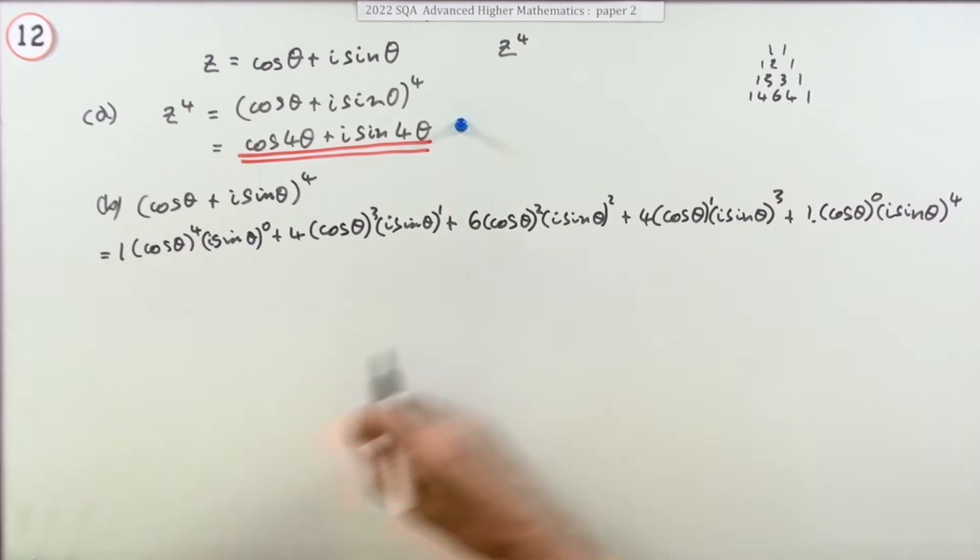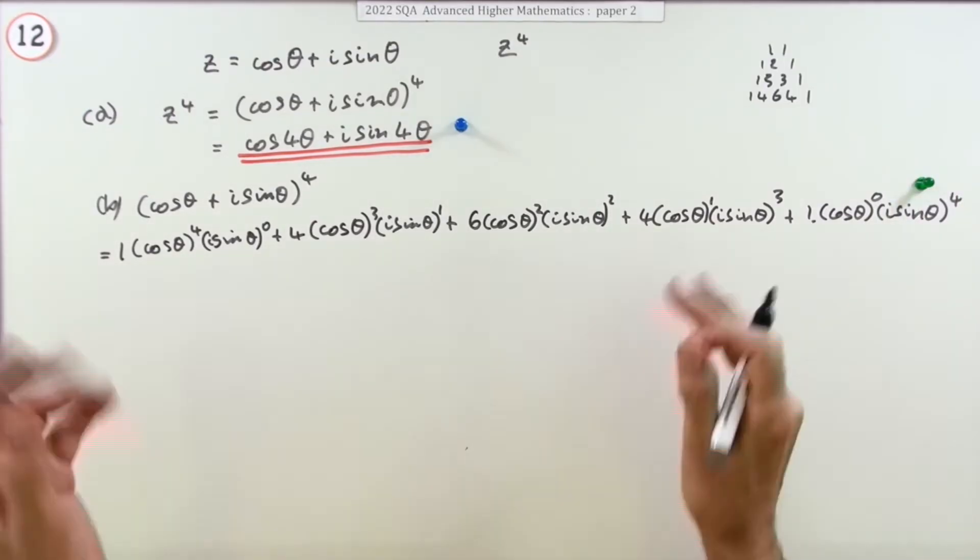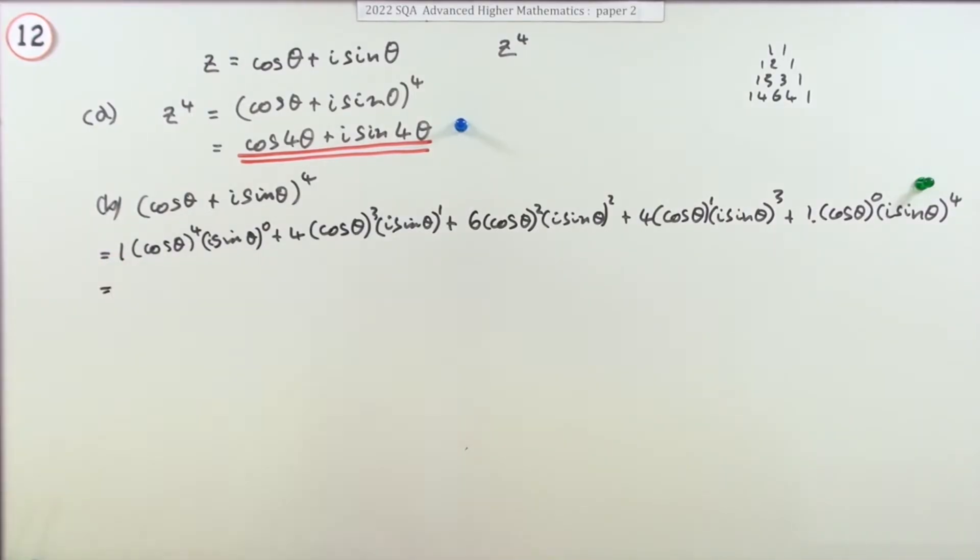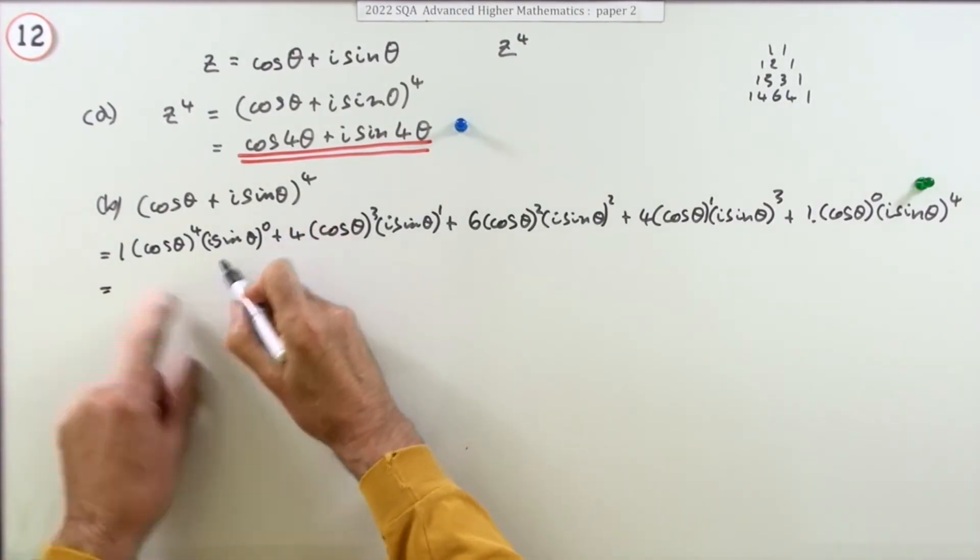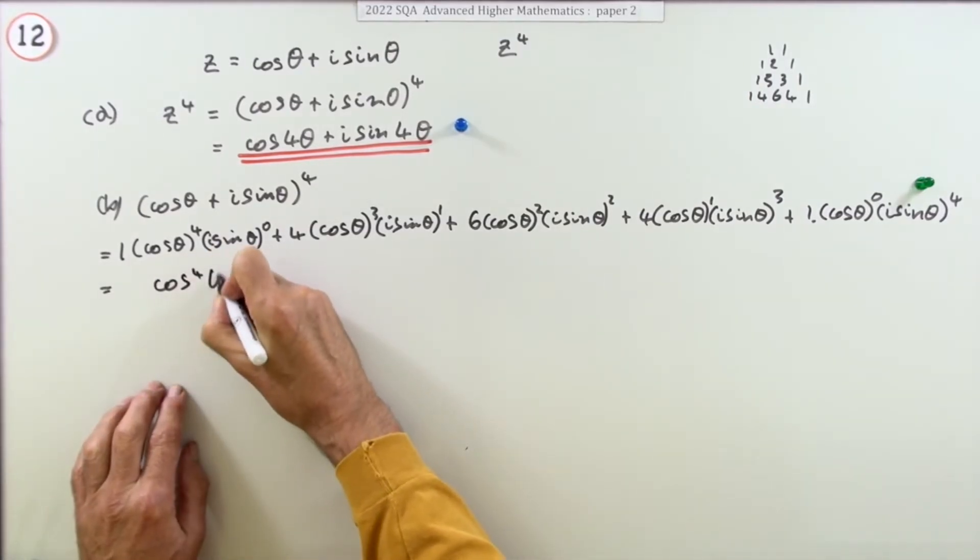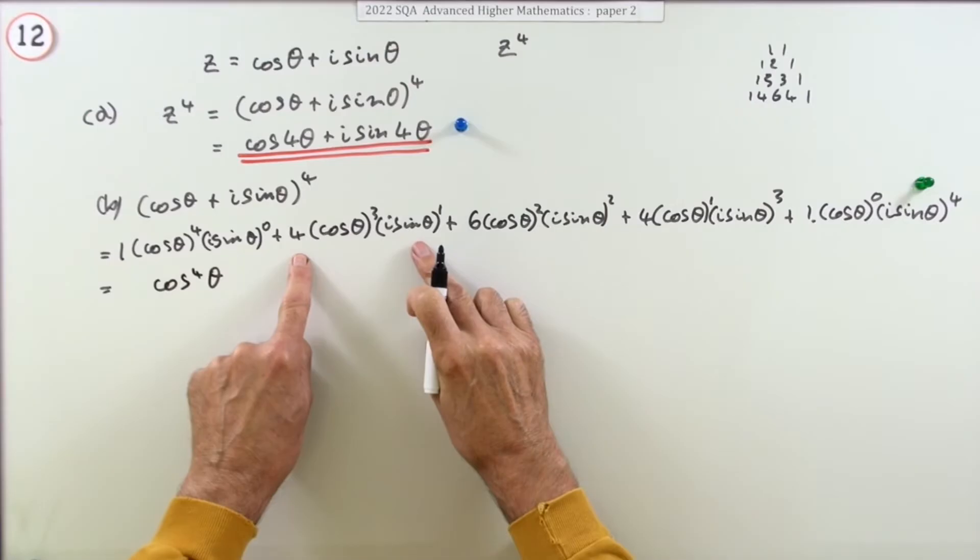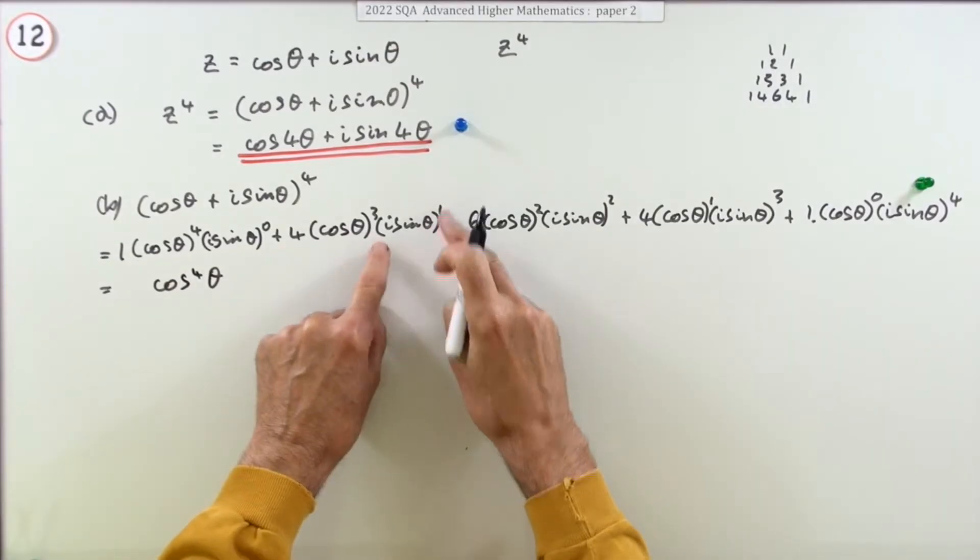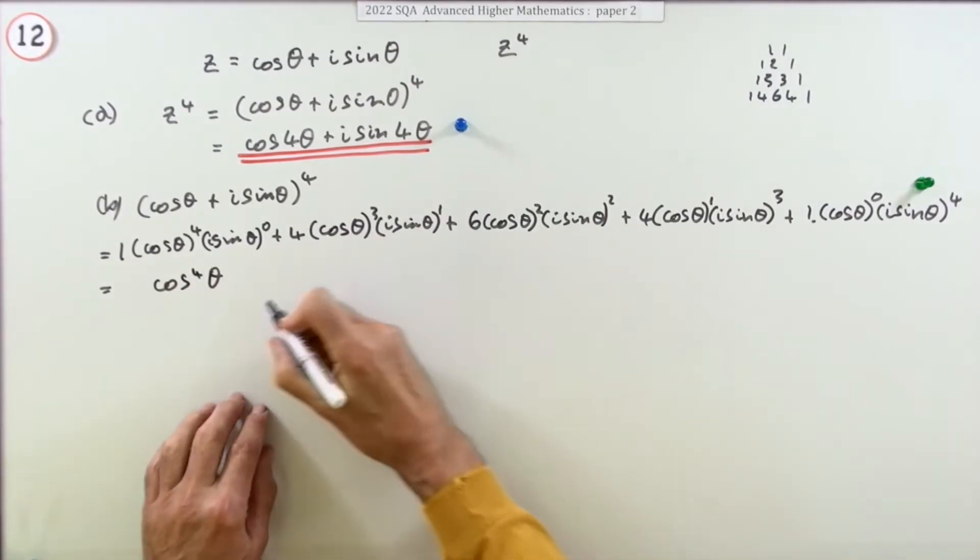Now spelling it all out like that gets the mark because that's the binomial expansion but now you've got to tidy it all up. So the i to the 0 part would be, well that's just a 1 so the coefficient is still 1 so I don't need to show it. So that first term is just cos to the 4 theta.